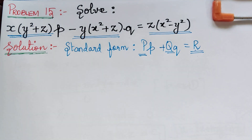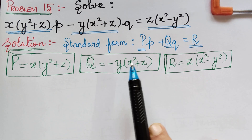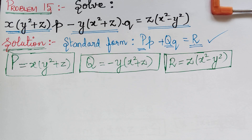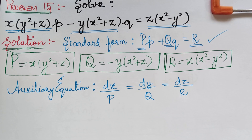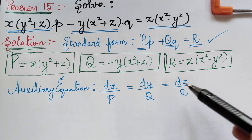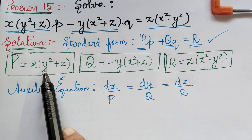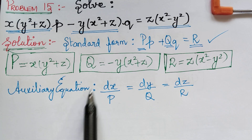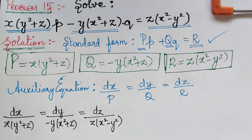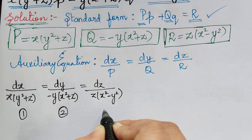We write the values of P, Q, and R, then write the auxiliary equation of Lagrange's partial differential equation: dx/P = dy/Q = dz/R. Substituting the values of P, Q, and R, we obtain the three ratios, which we mark as 1, 2, and 3.